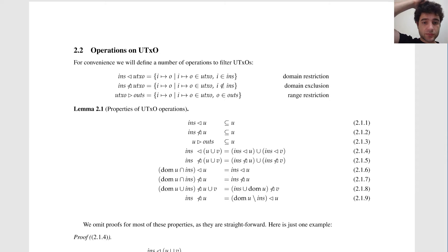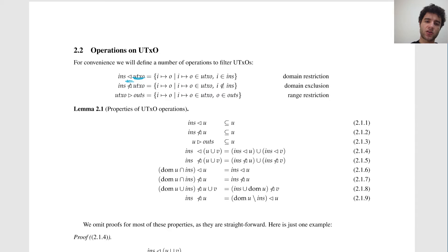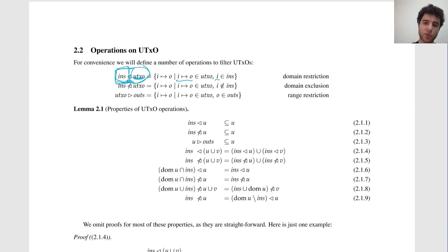These are some operators we'll need to reason about the performance of certain operations. Imagine we have our UTXO and we want to filter it to a subdomain. We write this with a triangle along with a set of inputs. This operation means: take the UTXO and filter down to everything where the inputs belong to this given set. We can also have the opposite operation — exclusion — where we take only the entries whose inputs are not part of a given set of inputs.